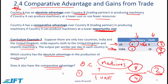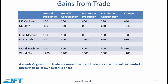You can do the same exercise for cloth to figure out which country has the absolute advantage and comparative advantage there. The quick answer is that India has both the absolute advantage and comparative advantage with respect to cloth. So if the two countries trade, it makes more sense for India to specialize in cloth and the UK to specialize in machinery — India exports cloth and imports machinery, while the UK exports machinery and imports cloth.